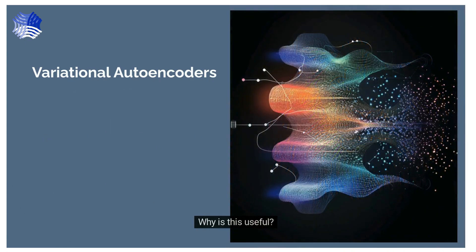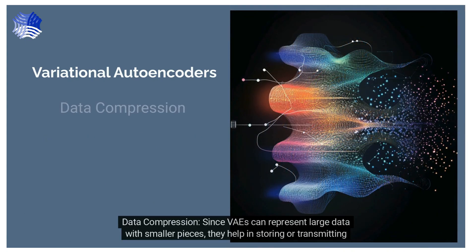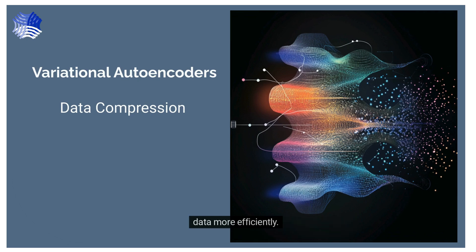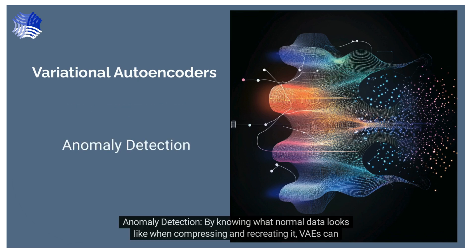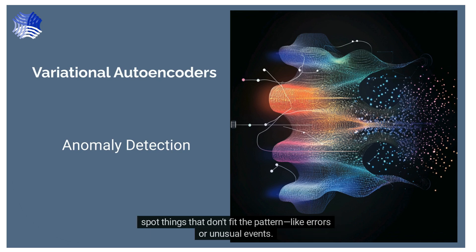Why is this useful? Data compression: since VAEs can represent large data with smaller pieces, they help in storing or transmitting data more efficiently. Anomaly detection: by knowing what normal data looks like when compressing and recreating it, VAEs can spot things that don't fit the pattern, like errors or unusual events.